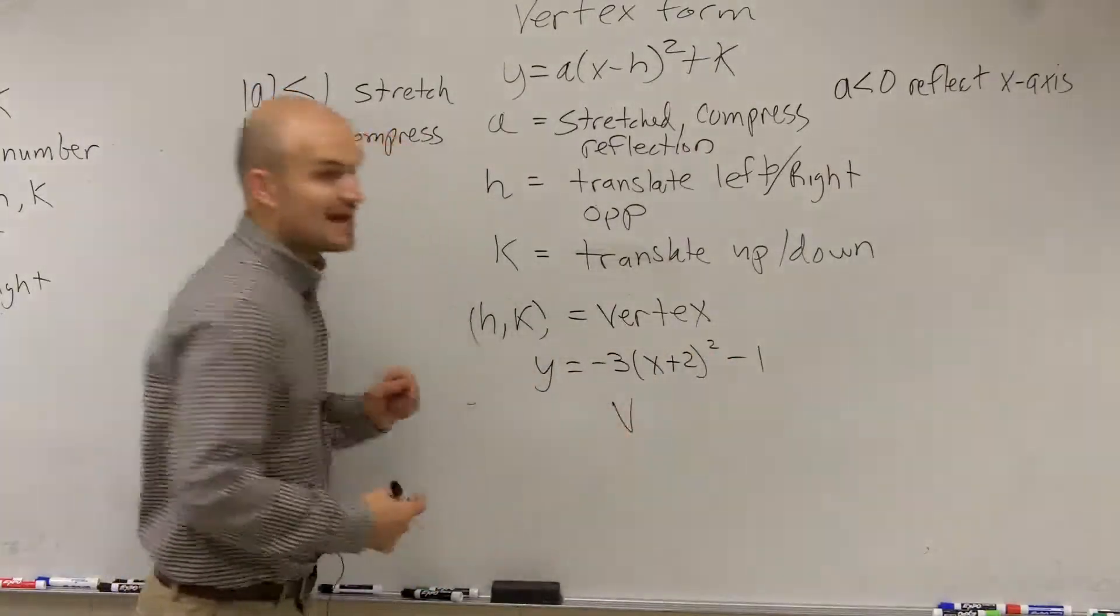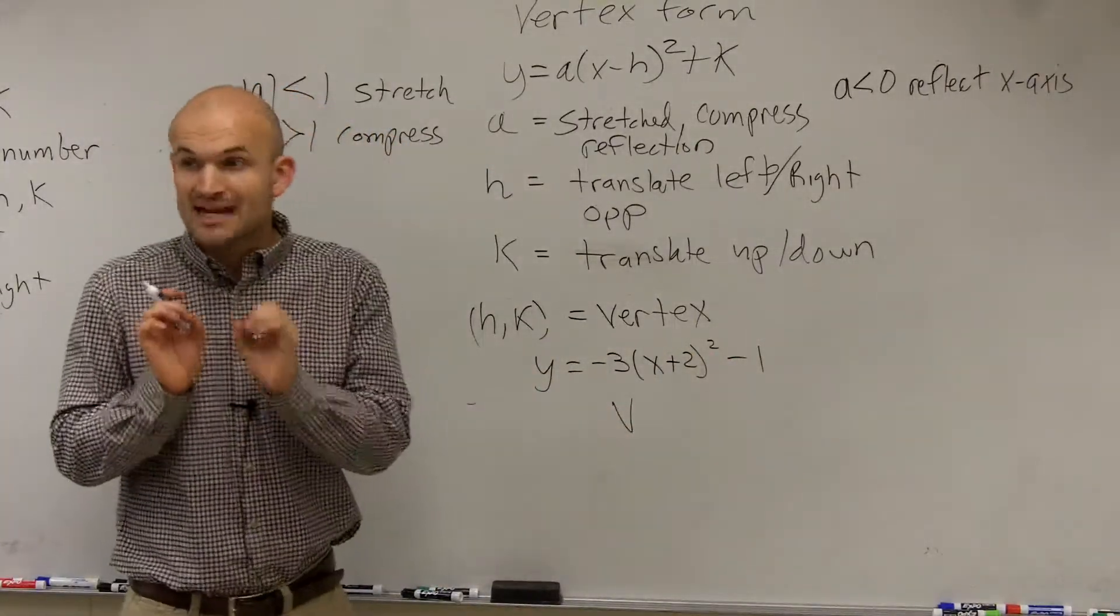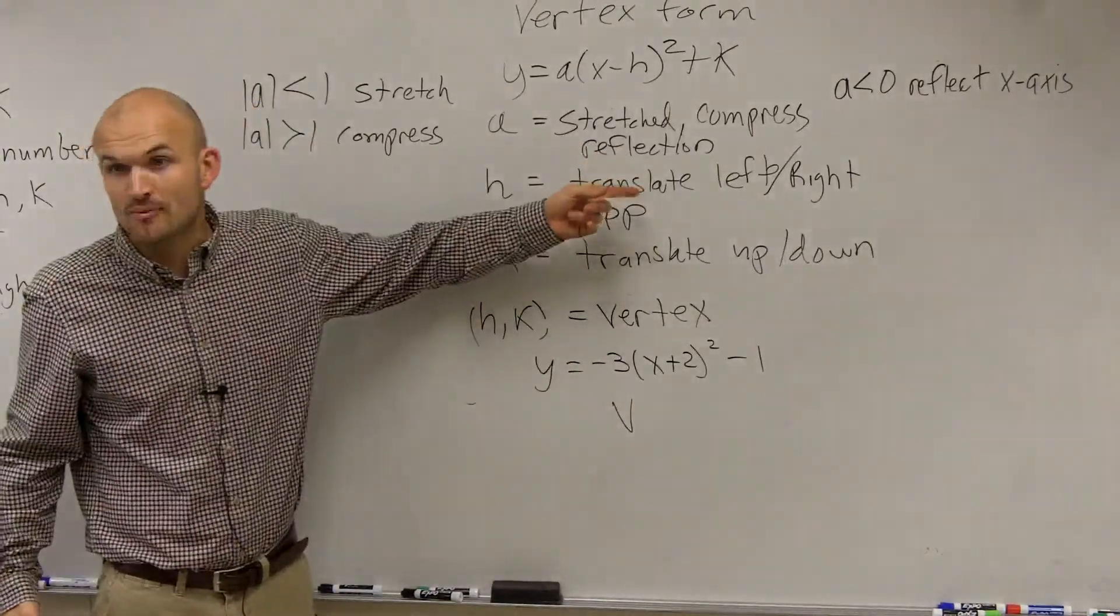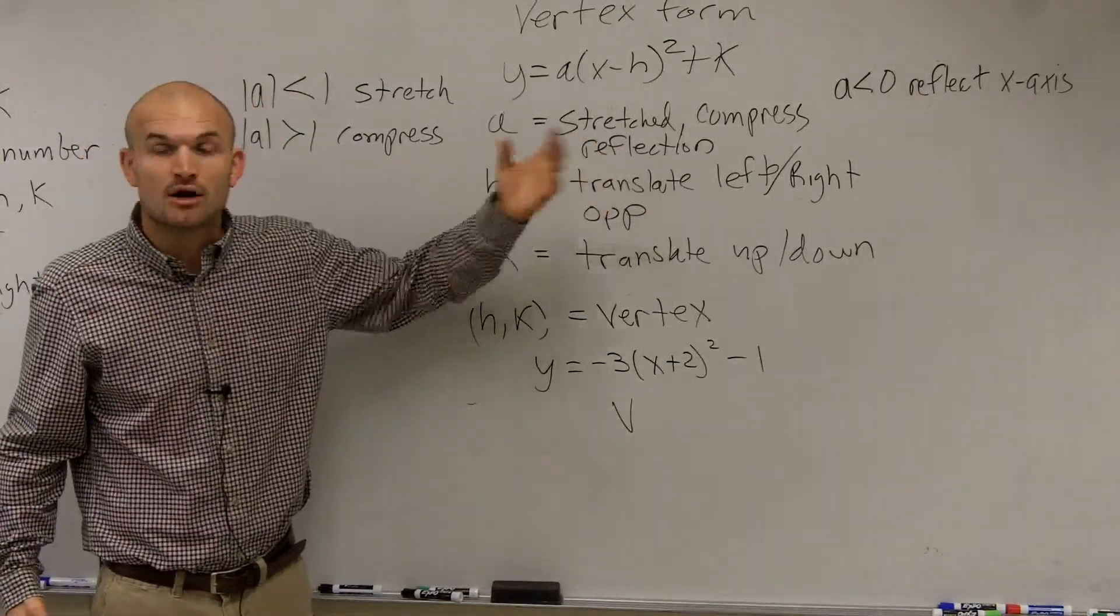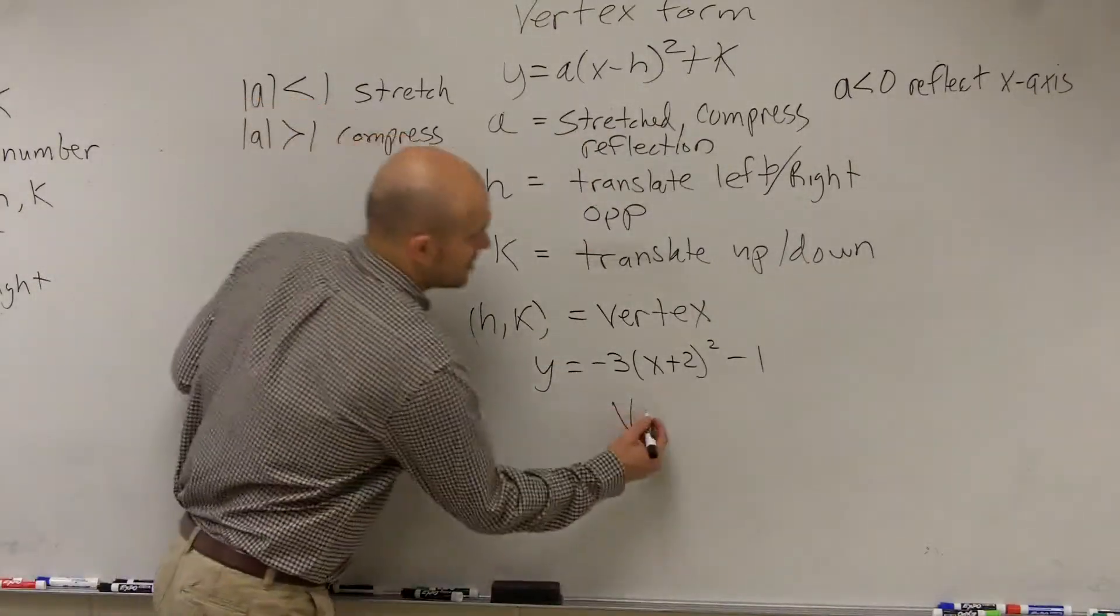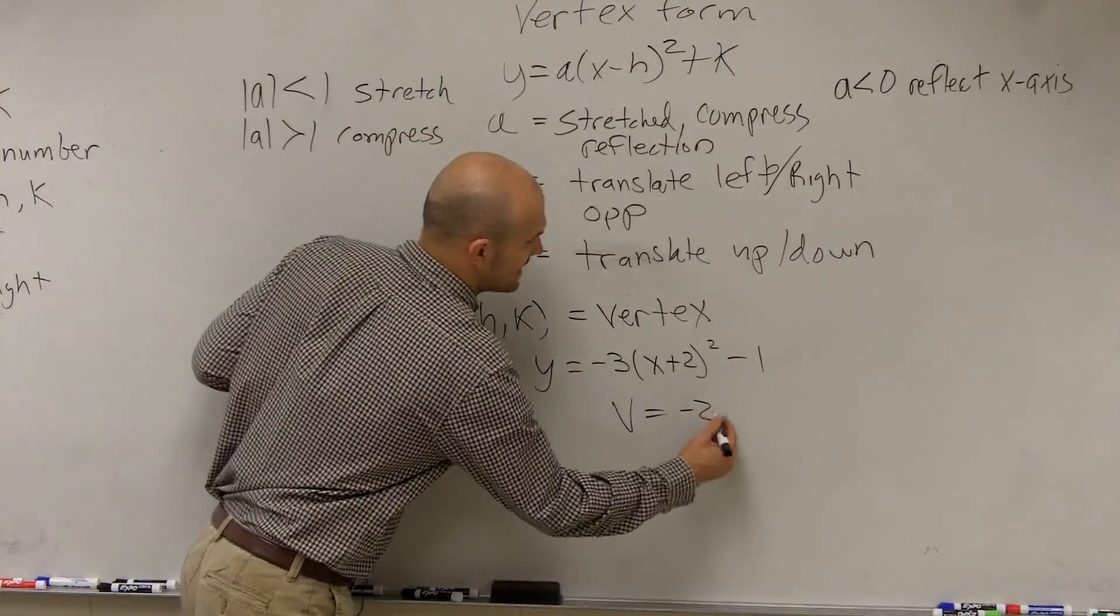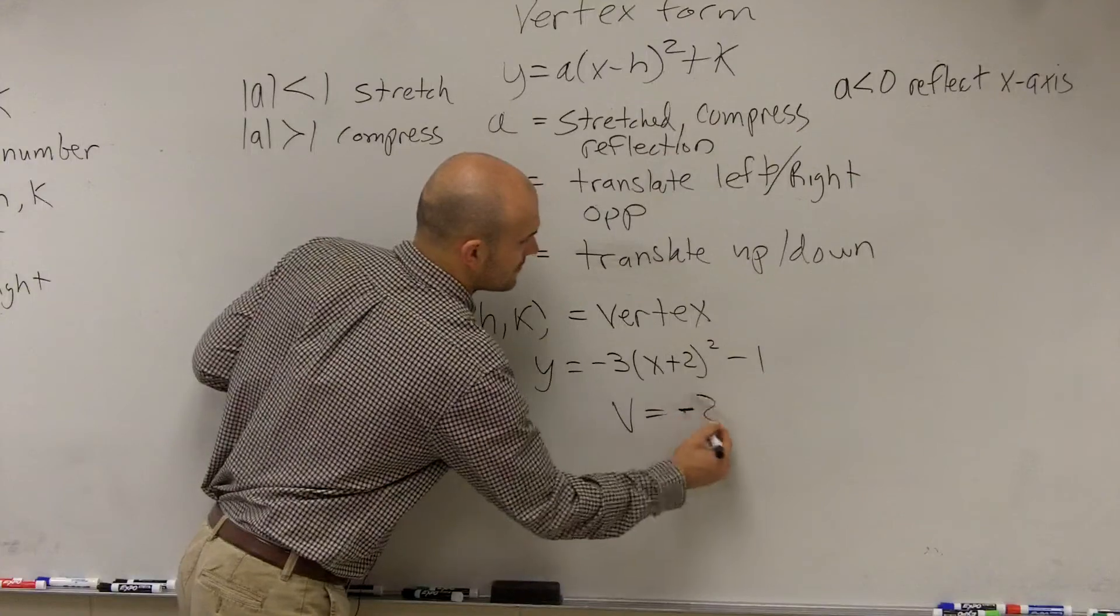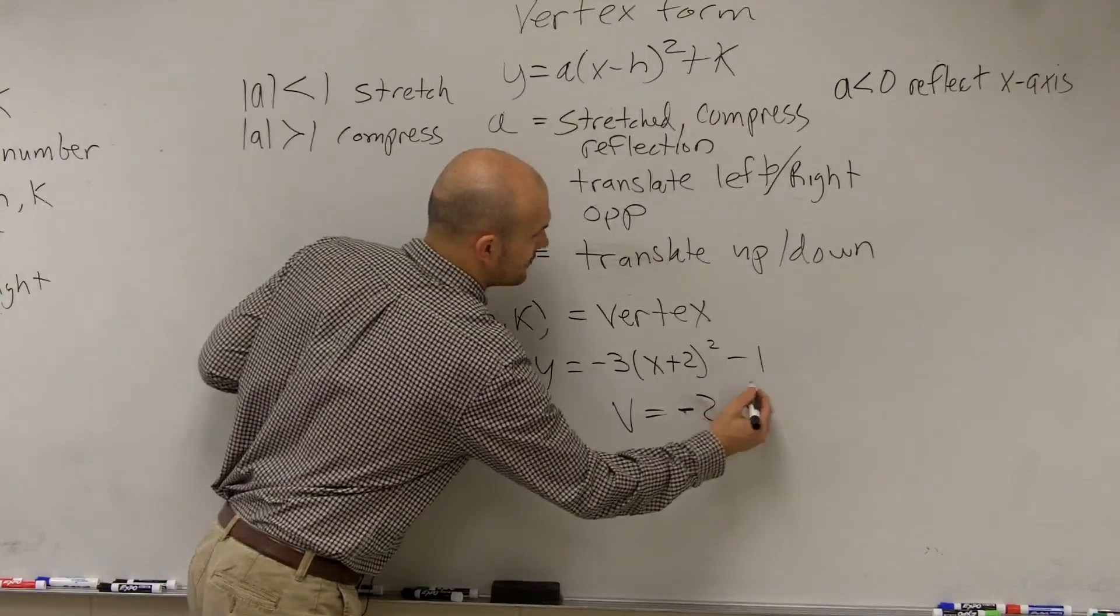We also can say that the vertex, which is going to be the maximum point, right, because remember our a? Our a is just like in our standard form a. Our a is less than 1, or sorry, a is less than 0, so therefore our vertex is going to be a max. But we could say our vertex, which is a max, is at negative 2, I'm sorry, yeah, negative 2, negative 1.